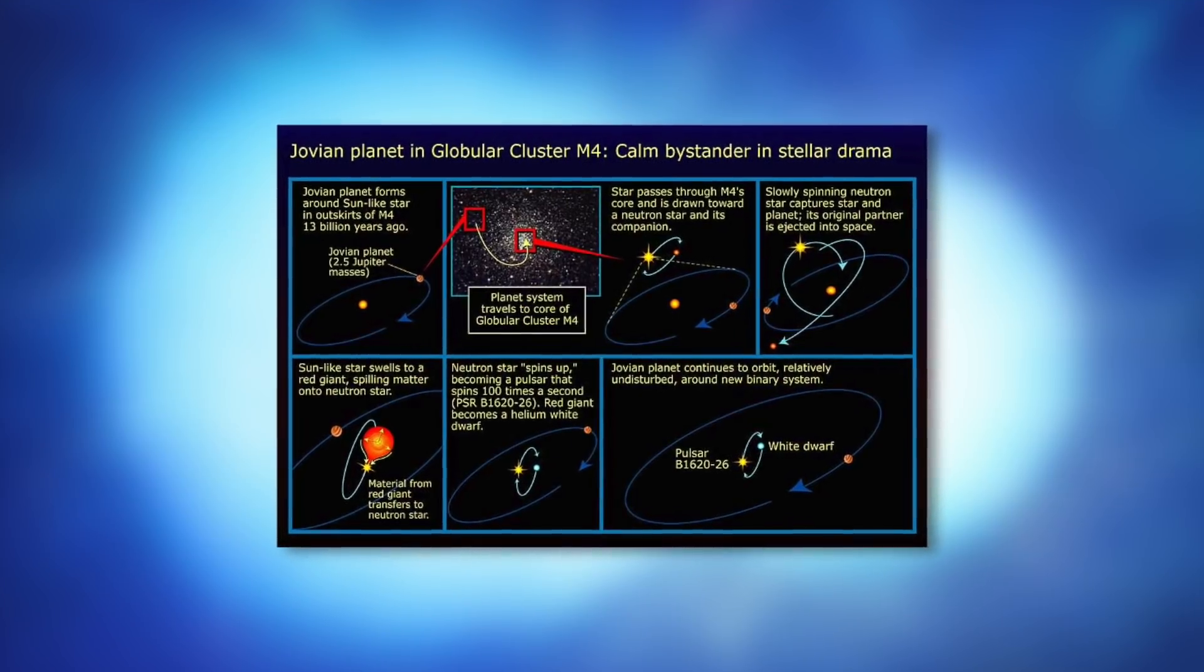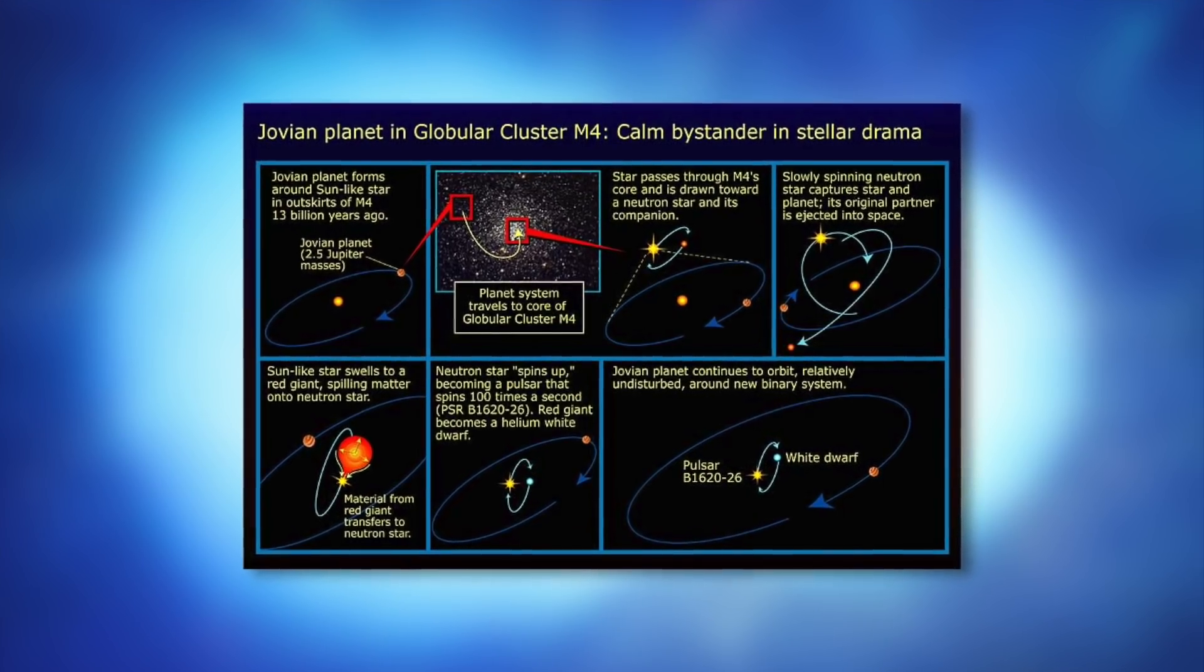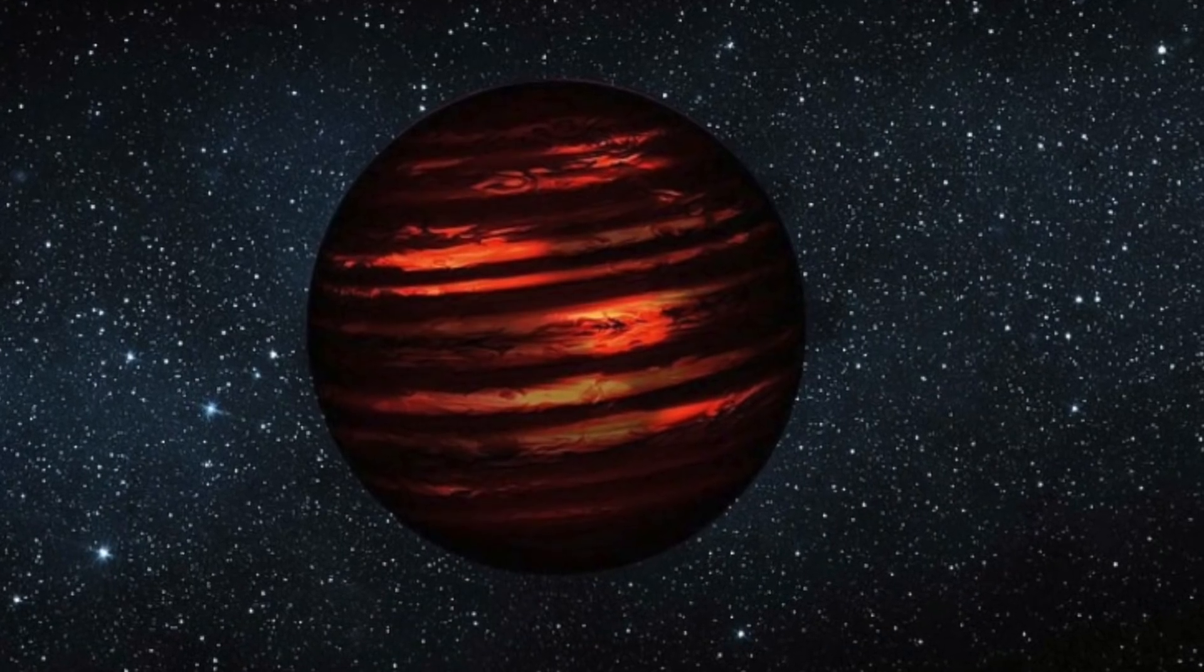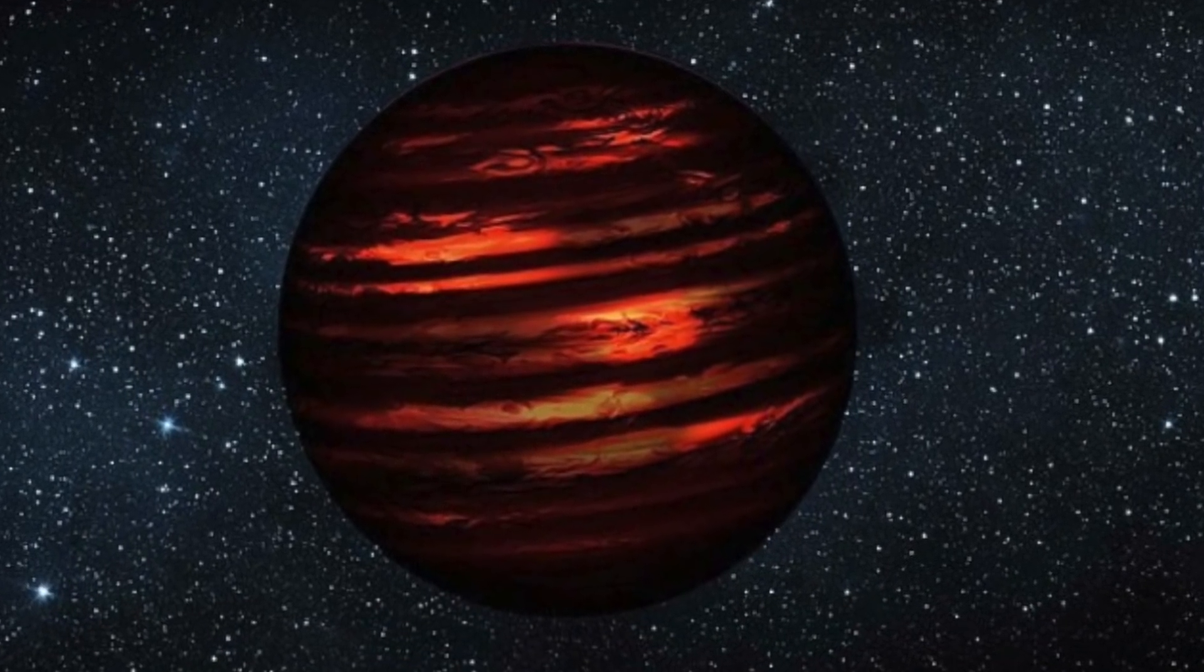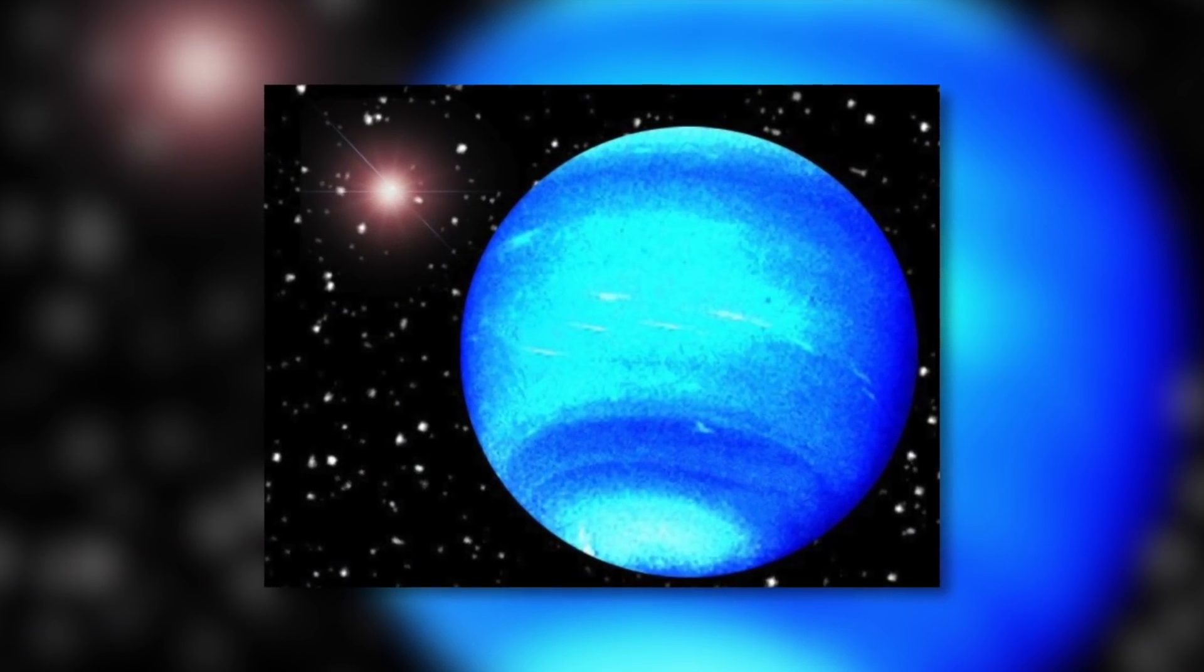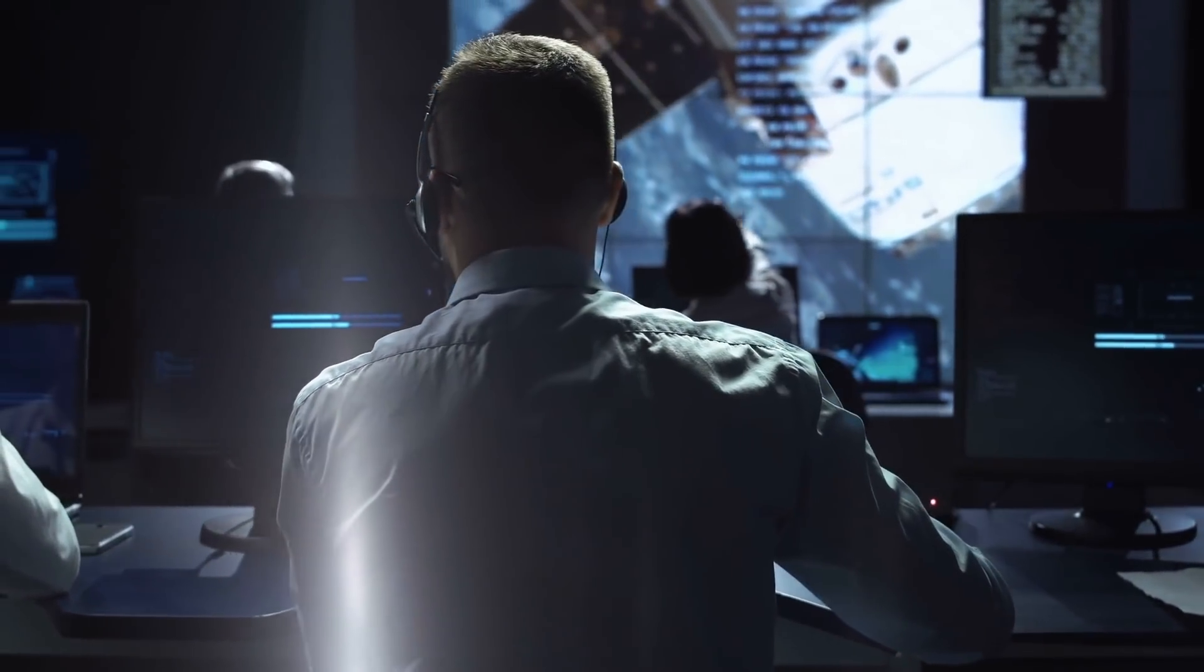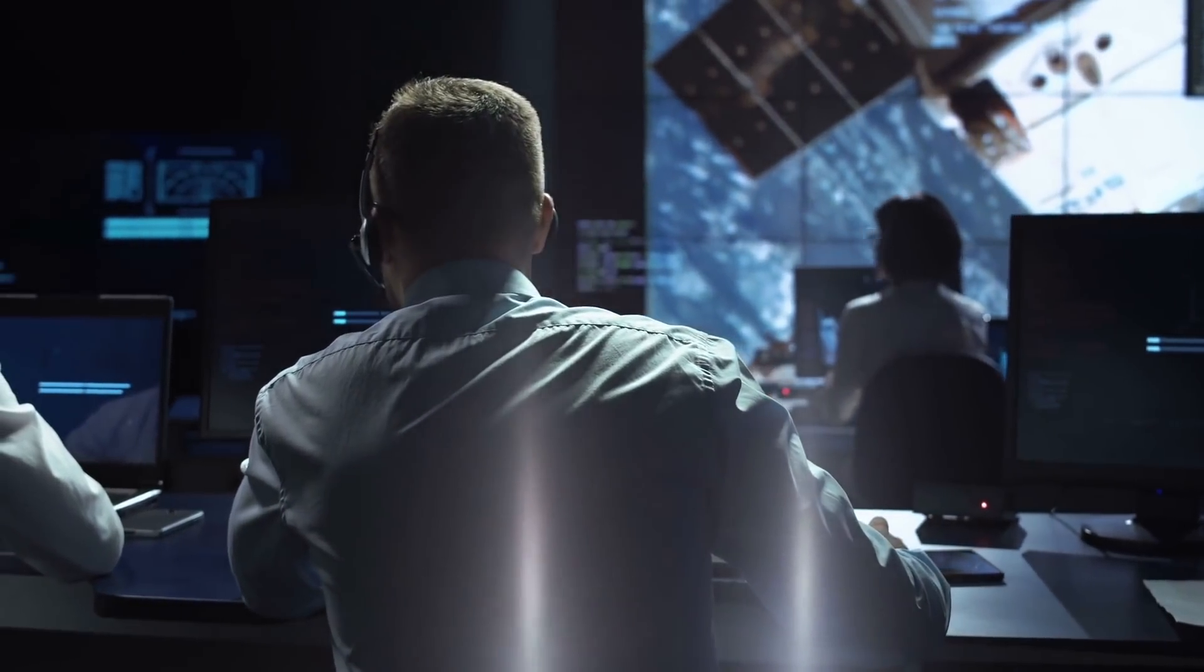Some time later, astronomers noticed further irregularities in the pulsar, indicating that a third object was orbiting the others. This new object was thought to be a planet, but they also speculated on a brown dwarf or a solid-state star. The debate about its true identity continued into the 1990s. The debate was ended when astronomers were finally able to measure the planet's true mass through ingenious celestial detective work.